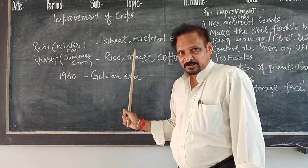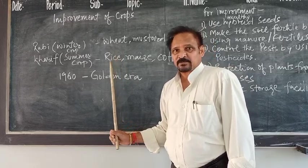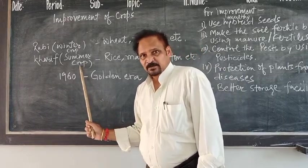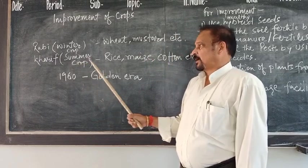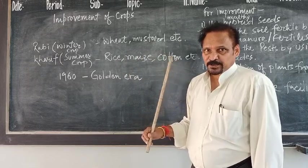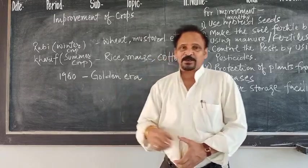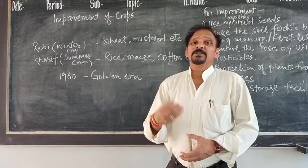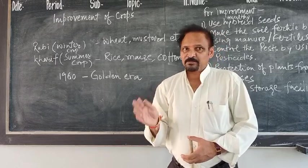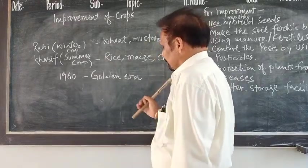The second type of crop grown in India is the Kharif crop, which is also known as the summer crop. Examples of summer crop are rice, maize, sugarcane, and similar crops. I think all of you will know about these two kinds of crops — Rabi crop, which is the winter crop, and Kharif crop, which is the summer crop.